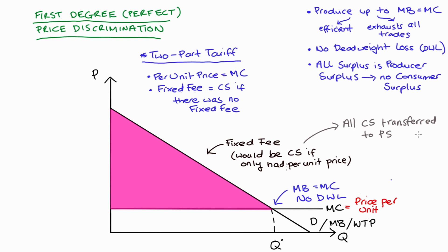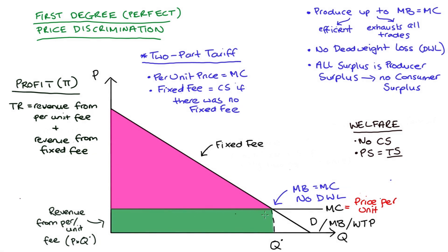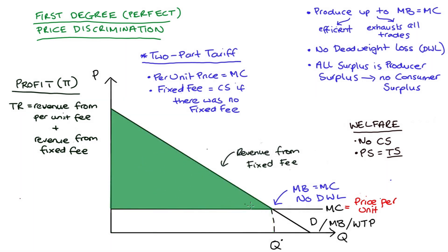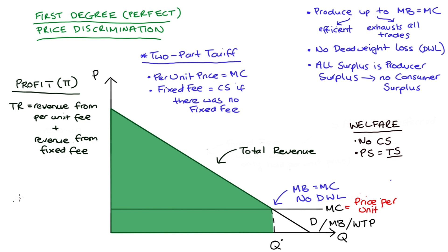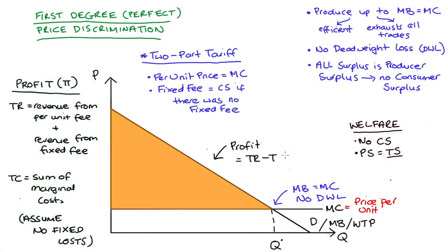In terms of welfare, as before, no consumer surplus — but that area becomes producer surplus, which is the same outcome as when we charged prices equal to willingness to pay. This is equal to total surplus in the market. In terms of profit, total revenue will be the revenue from the per-unit fee plus the revenue from the fixed fee. The area below represents revenue from the per-unit fee — that's marginal cost times Q*. The fixed fee is the triangle area above that, so total revenue is the whole green area, the same as before. Total costs are the same again — assuming no fixed costs, just the area under marginal cost. So profit ends up being the same orange triangle area, again assuming no fixed costs.